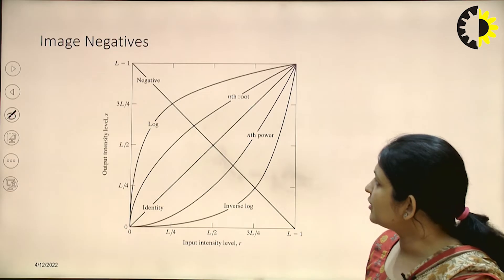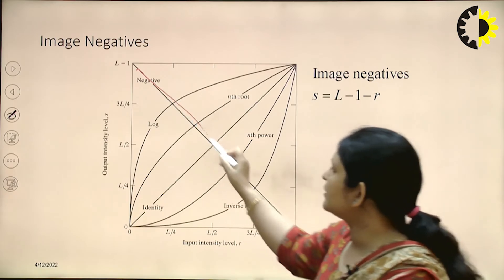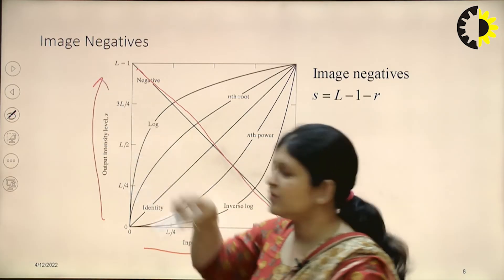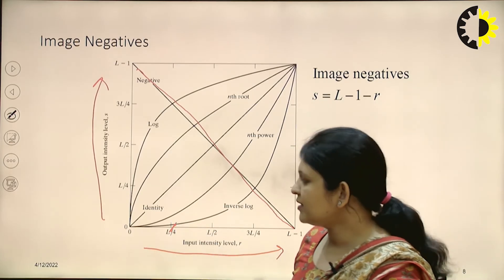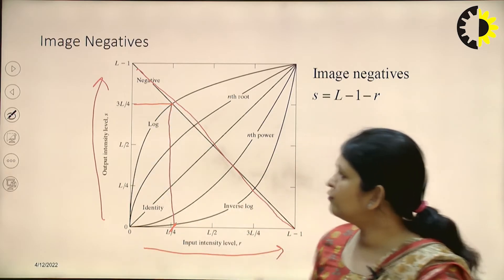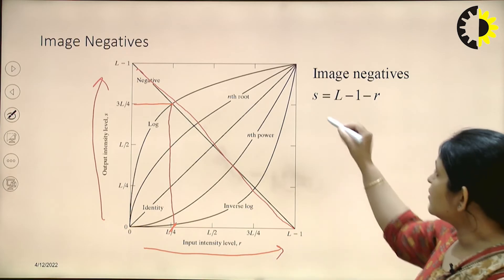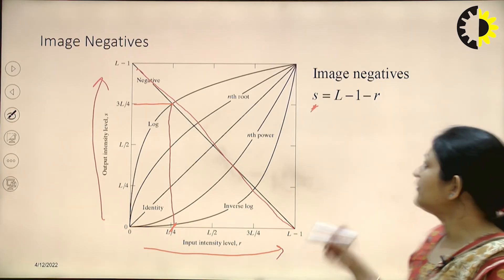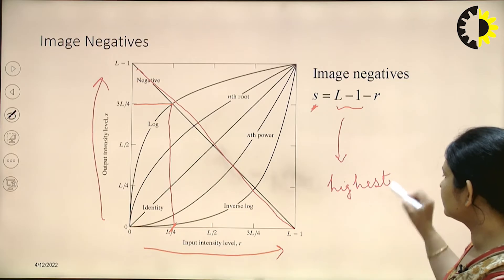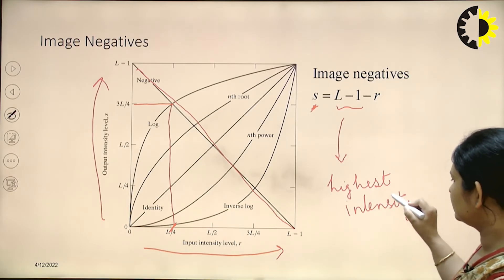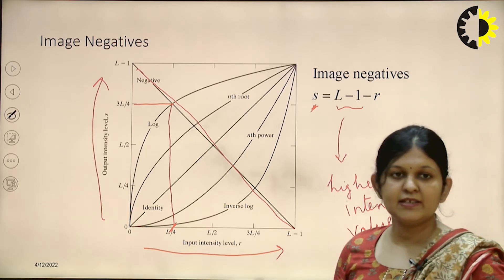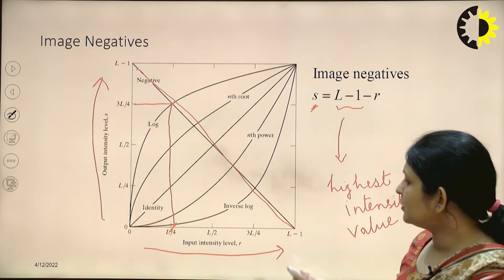Next we have the image negative. The image negative is just the inverse of the identity. We have an entire range in the input from 0 to L-1, and similarly in the output from 0 to L-1. If the input is L/4, the output is 3L/4 in the negative transformation. The function is: s = (L-1) - r, where L-1 is the highest intensity value in the image minus the current input intensity value. This gives us the negative of the image.